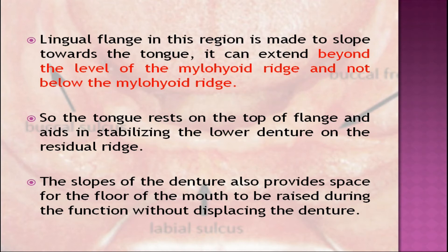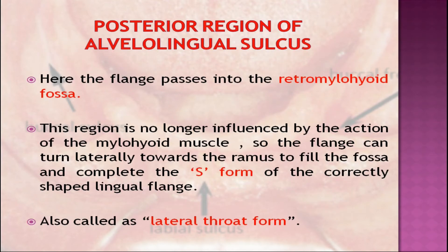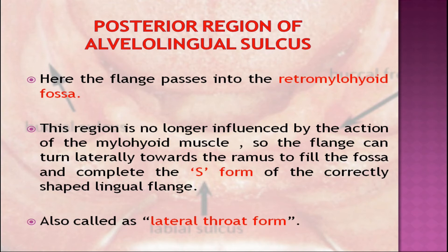This aids in stabilizing the lower denture on the residual ridge. The slopes of the denture also provide space for the floor of the mouth to be raised during function without displacing the denture. In the posterior region of the alveolingual sulcus, the flange passes into the retromylohyoid fossa. This region is no longer influenced by the action of the mylohyoid muscle, so the flange can turn laterally towards the ramus to fill the fossa and complete the S-form of the correctly shaped lingual flange. This area is also called the lateral throat form.